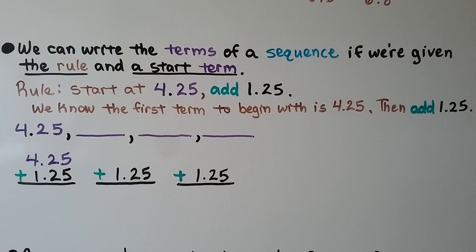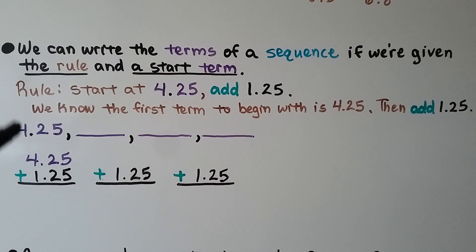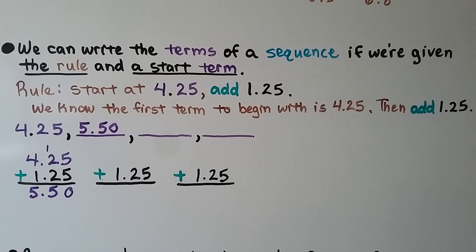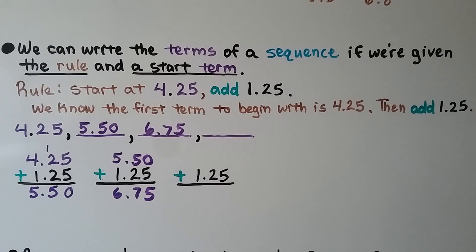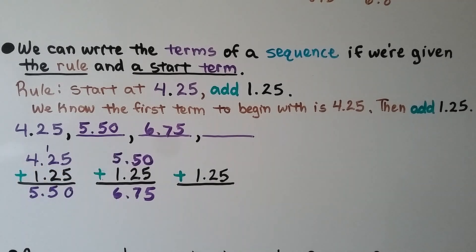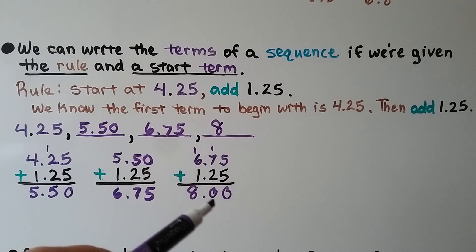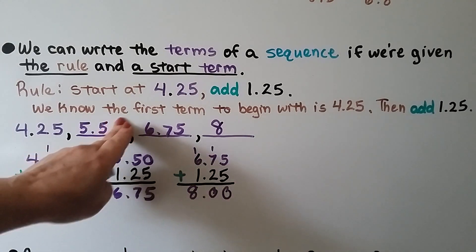We can write the terms of a sequence if we're given the rule and a start term. The rule says: start at 4 and 25 hundredths and add 1 and 25 hundredths. So the first term is 4 and 25 hundredths. We add 1 and 25 hundredths to get the next term: 5 and 50 hundredths. Then we add 1 and 25 hundredths to get 6 and 75 hundredths. Adding again gives the last term — 8 ones, which we can write as just 8. We can also remove trailing zeros, writing 5 and 50 hundredths as 5 and 5 tenths.